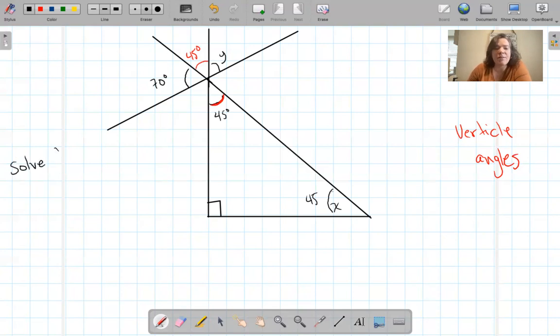And I say, solve for Y. Well, if this angle were, let me erase. Let me pretend like you didn't have this one. If this is 45, then I know this one is 45. And this one is 70.